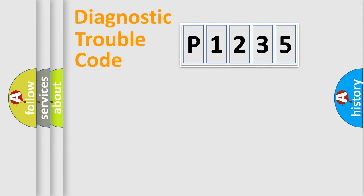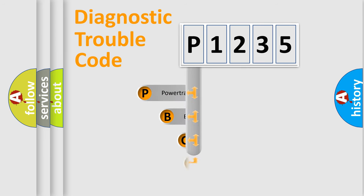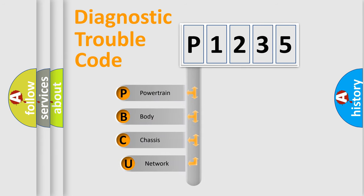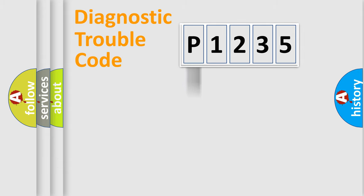Let's do this. First, let's look at the history of diagnostic fault code composition according to the OBD2 protocol, which is unified for all automakers since 2000. We divide the electric system of an automobile into four basic units: Powertrain, Body, Chassis, and Network.